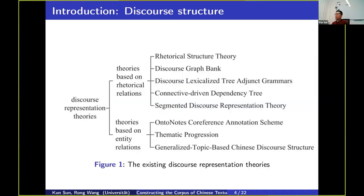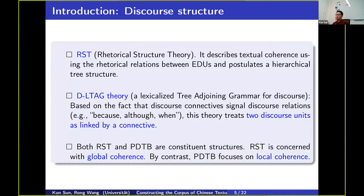Some scholars have proposed theories about discourse structure, and among them two have become very influential. The first is Rhetorical Structure Theory, abbreviated as RST, which is quite well-known. The second is discourse lexicalized tree adjunct grammars. According to RST and PDTB, well-known discourse treebanks have been established.